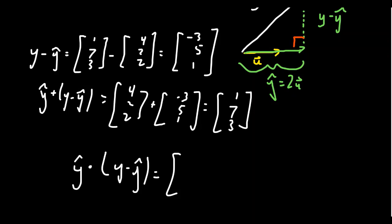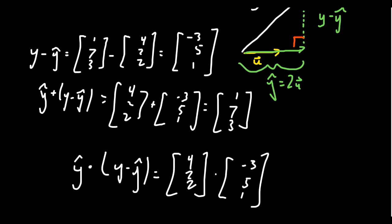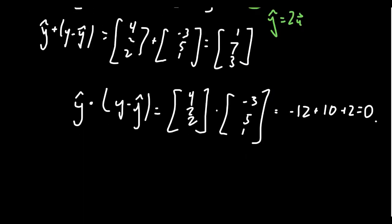We compute [4, 2, 2] · [-3, 5, 1] = -12 + 10 + 2 = 0. I should note that for complex vectors the order of the dot product matters, though if two vectors are orthogonal you get zero either way. We do in fact get zero, which tells us that if W equals the span of u, then these two vectors are orthogonal.